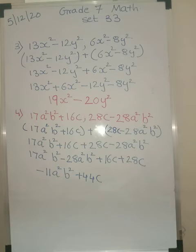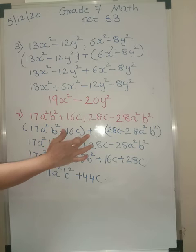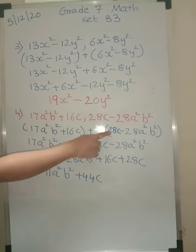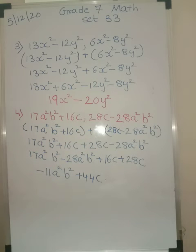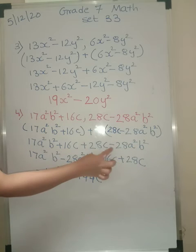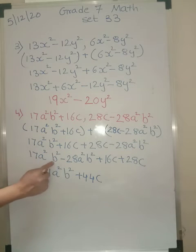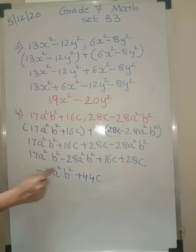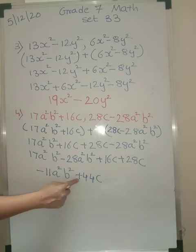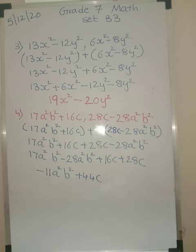Now look at the next question. 17a squared b squared plus 16c, and 28c minus 28a squared b squared. Again put the first expression in brackets, add plus sign, second expression in brackets: 28c minus 28a squared b squared. Open the brackets: 17a squared b squared plus 16c plus 28c minus 28a squared b squared. Take like terms together: 17a squared b squared minus 28a squared b squared, plus 16c plus 28c. So 17 minus 28 is minus 11, giving minus 11a squared b squared. 16 plus 28 is 44c. Do not forget to put the brackets — this is to be on the safe side.